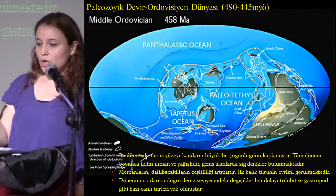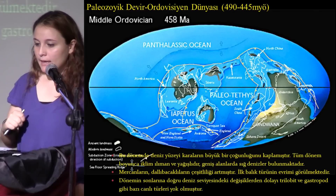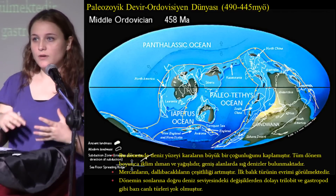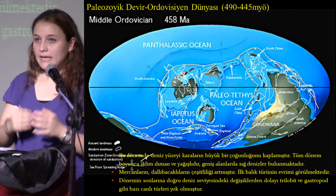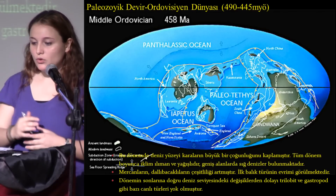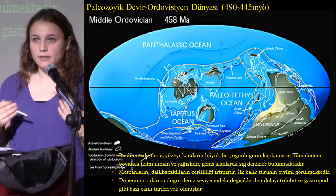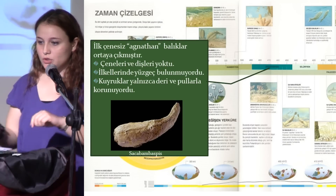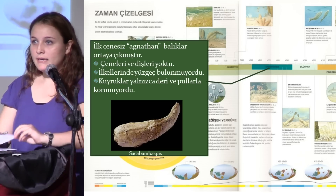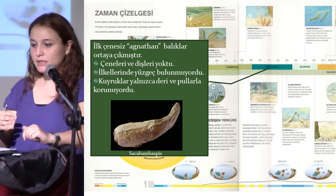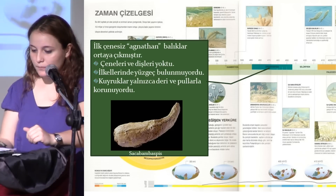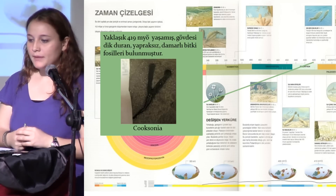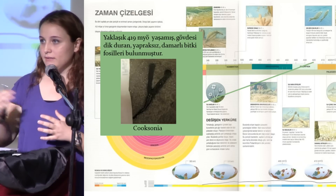Daha sonra Ordovisyen dünyasını görüyoruz; 490 ile 445 milyon yıl öncesini kapsayan bu dönemde deniz, karaların büyük çoğunluğunu kaplıyor ve iklim ılıman ve yağışlı. Mercanlar ve sığ denizlerin çok olmasından dolayı mercan ve dallı bacak çeşitleri artıyor; ilk balık türünün evrimi de bu dönemde ortaya çıkıyor. Dönemin sonlarına doğru deniz seviyesindeki değişikliklerden dolayı trilobit ve gastrobot gibi türler yok oluyor. İlk çenesiz balıklara — Agnatha balıkları — bu dönemde rastlıyoruz; çeneleri ve dişleri yok, bazı türlerinde yüzgeç bile bulunmuyor, kuyrukları deri ve pullarla korunuyordu.